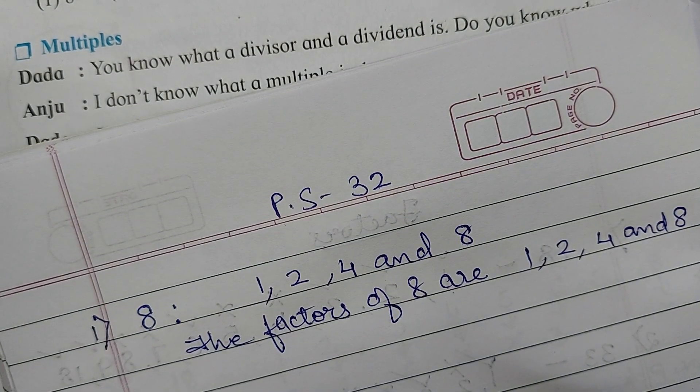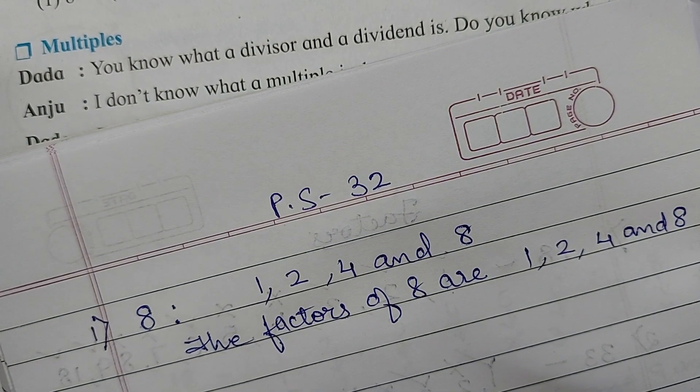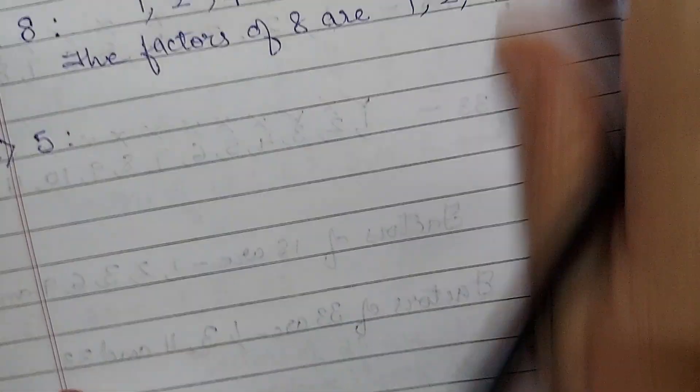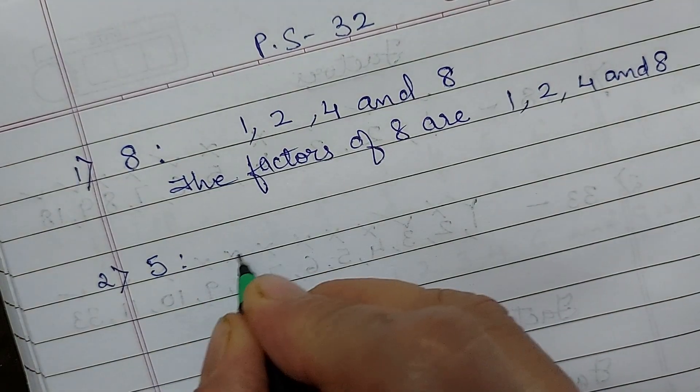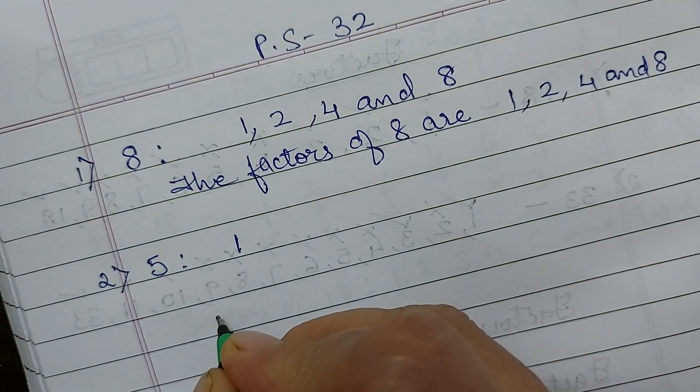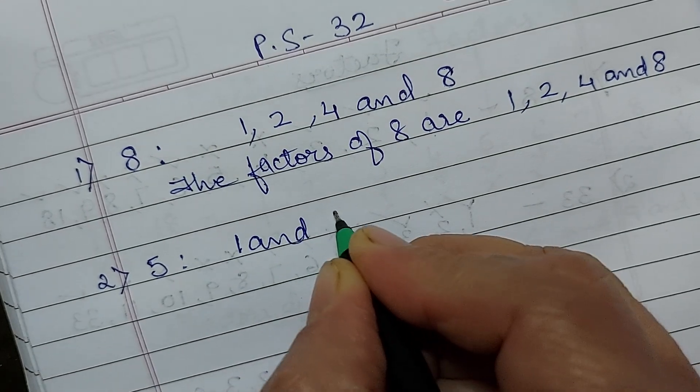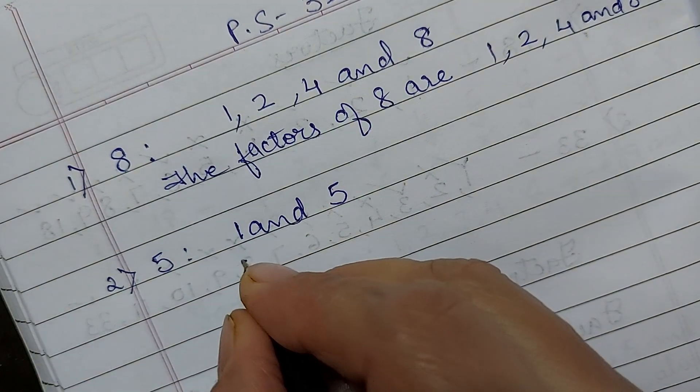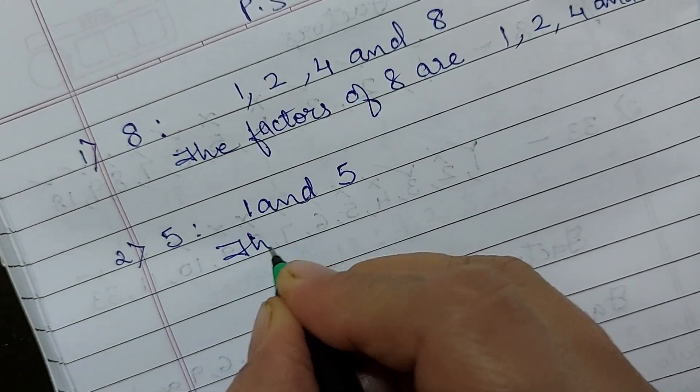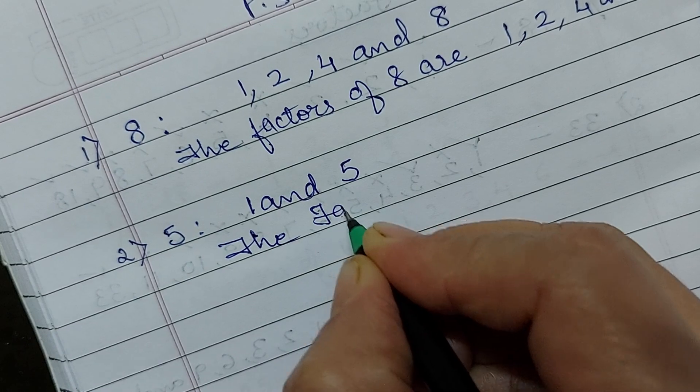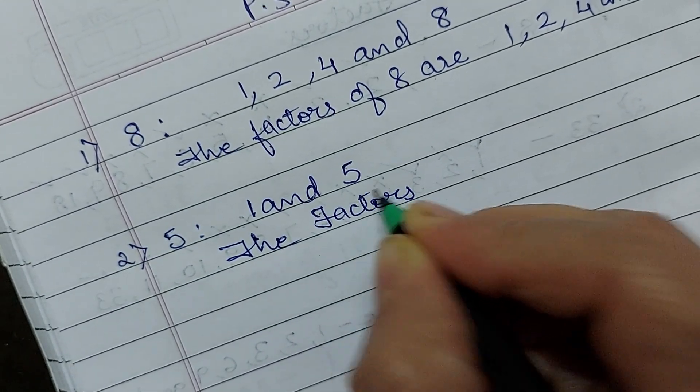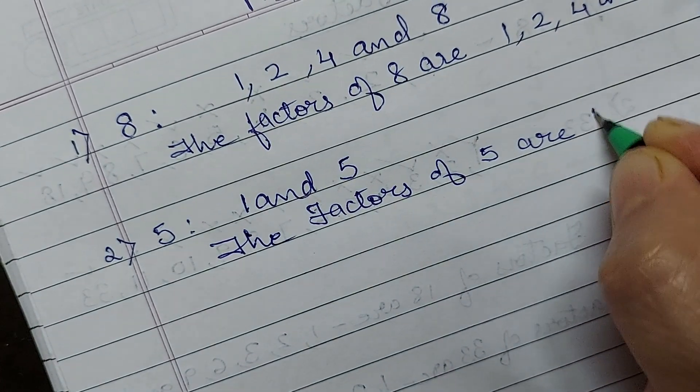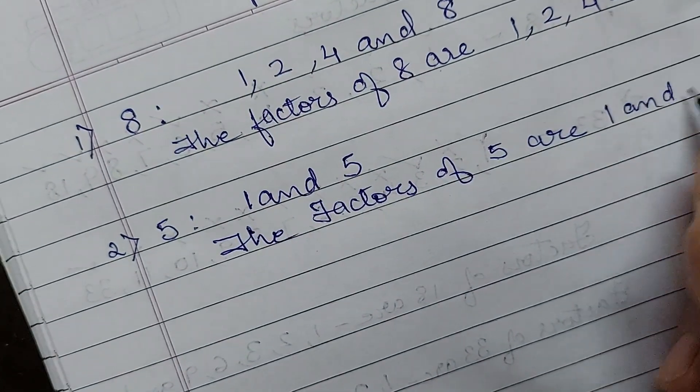Coming to the next question, your number is 5. Next question is 5. So 5 comes in the table of 1 and 5 itself. So factors of 5 are 1 and 5. The factors of 5 are 1 and 5.